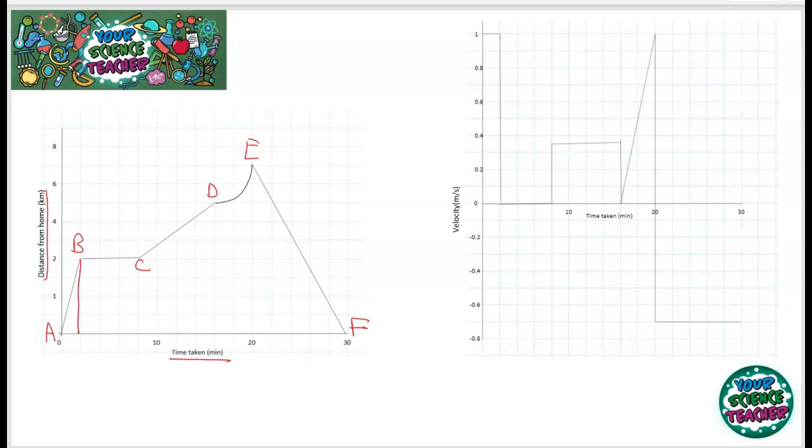To work out the speed in between these two bits, remember speed equals distance divided by time, and that will equal two kilometers divided by two minutes. So his speed will be one kilometer per minute. You could put it into meters per second if you wanted to; however, we're going to use kilometers per minute.